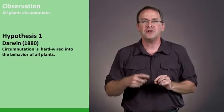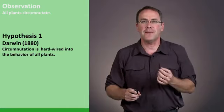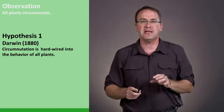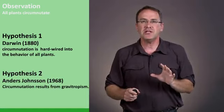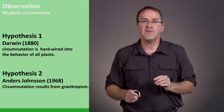Almost 100 years later, there was an alternative hypothesis by two Swedish scientists, Israelson and Johnsson. And they claimed that circumnutation is just a result of gravitropism.